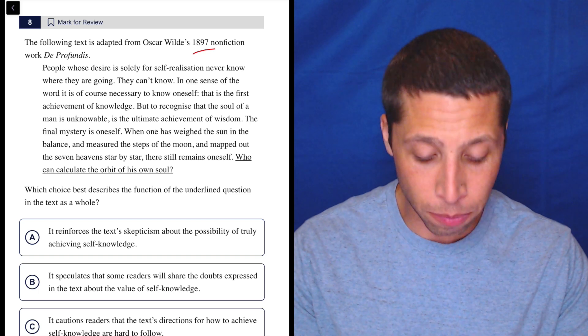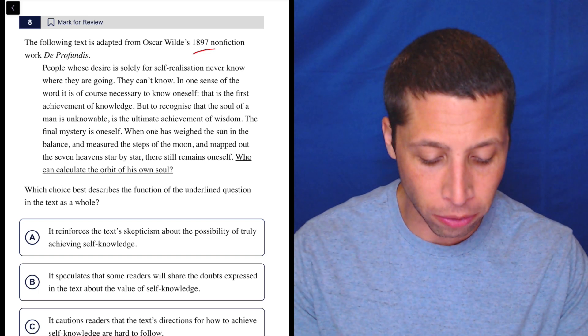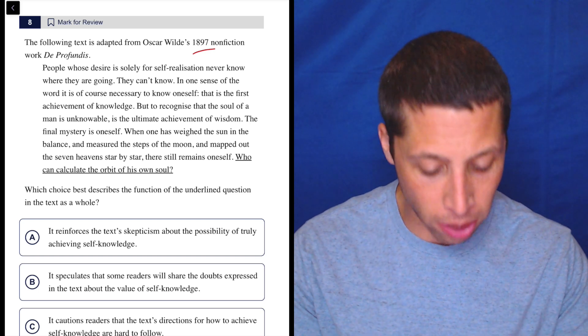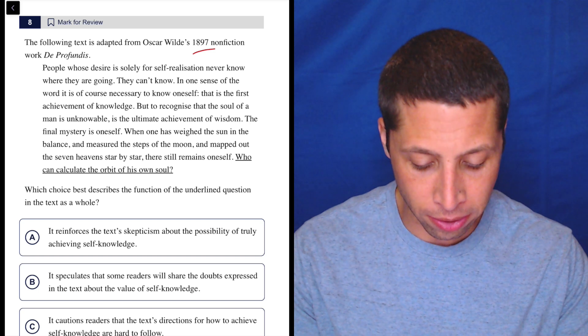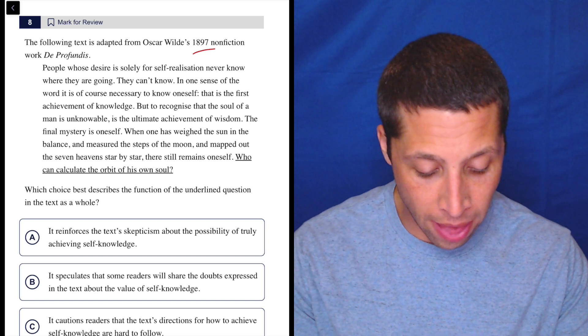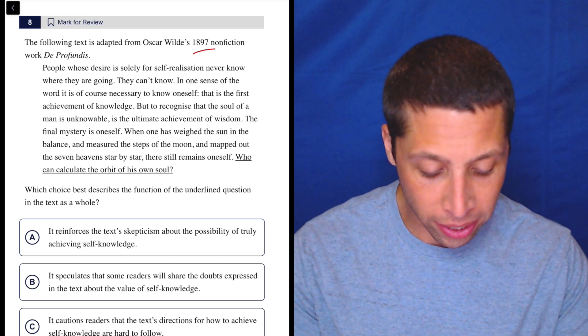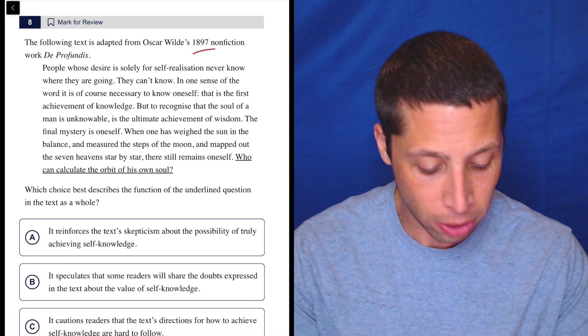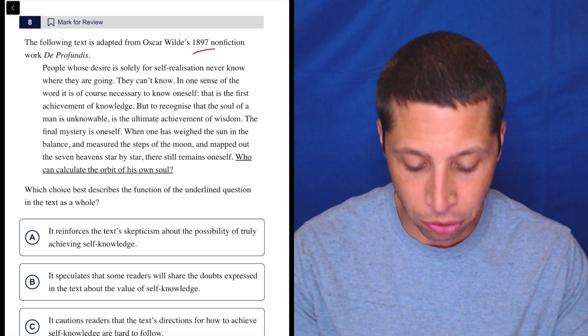People whose desire is solely for self-realization never know where they are going. They can't know. In one sense of the word, it is, of course, necessary to know oneself. That is the first achievement of knowledge. But to recognize that the soul of a man is unknowable is the ultimate achievement of wisdom. The final mystery is oneself.